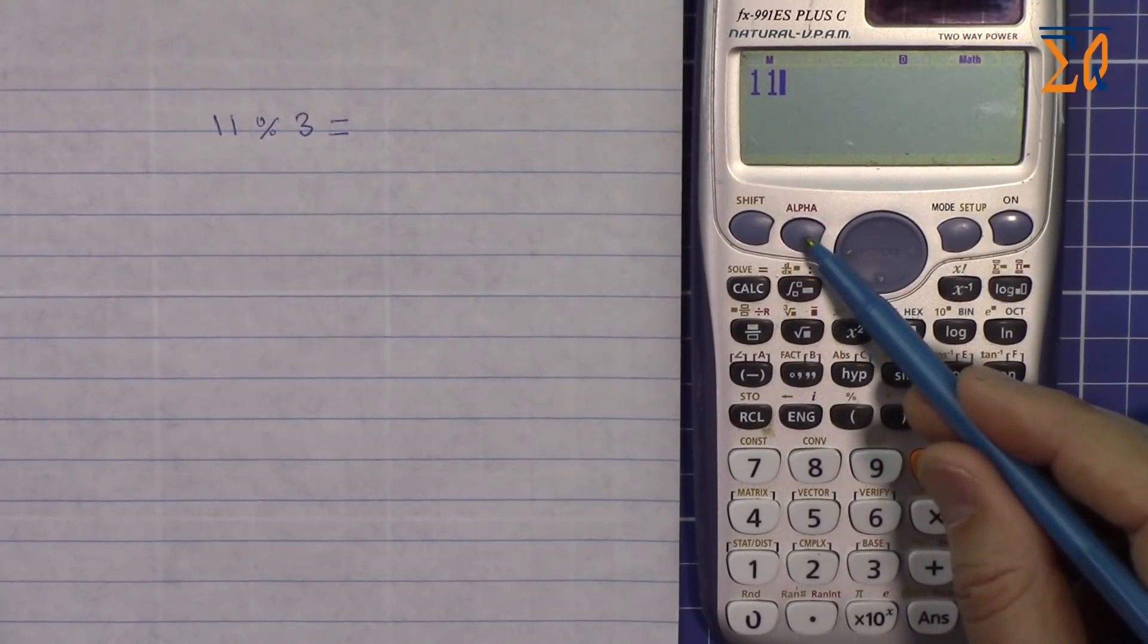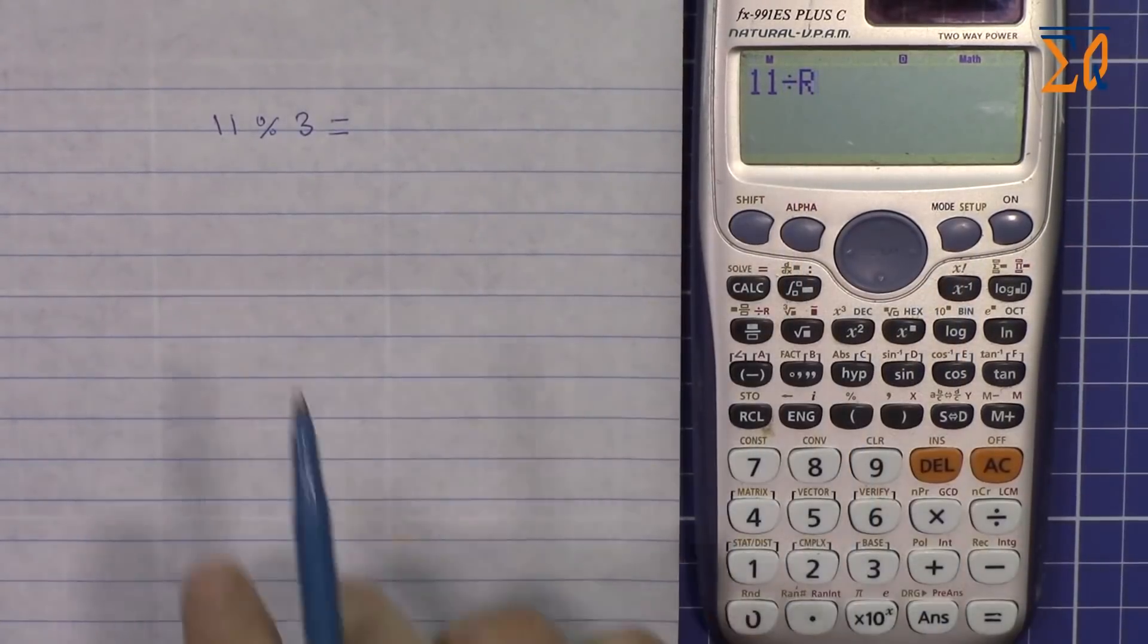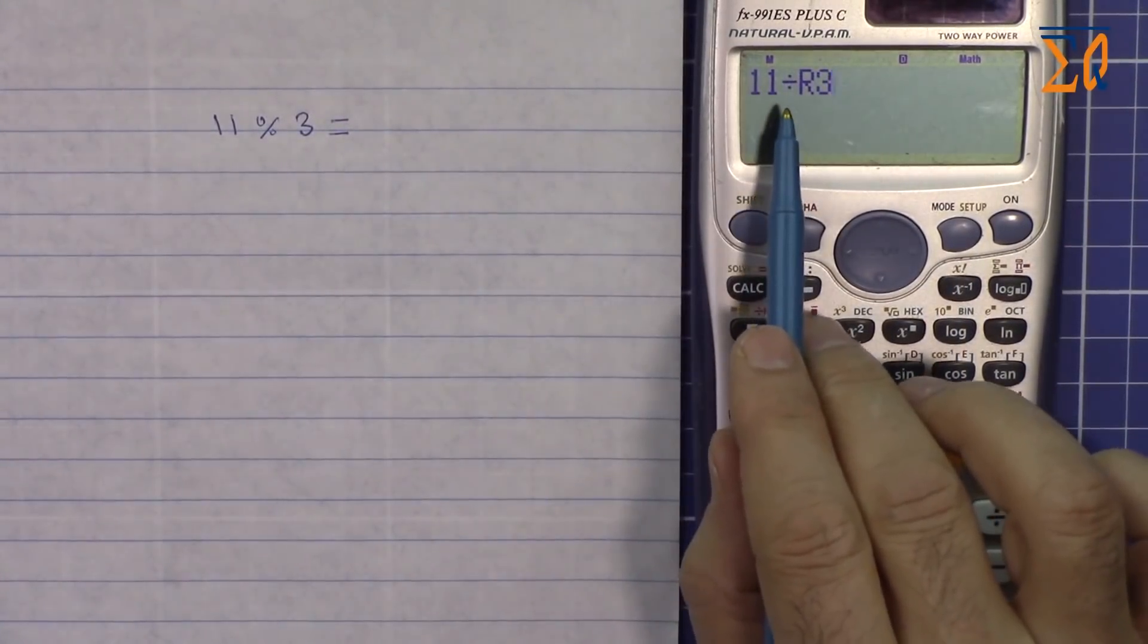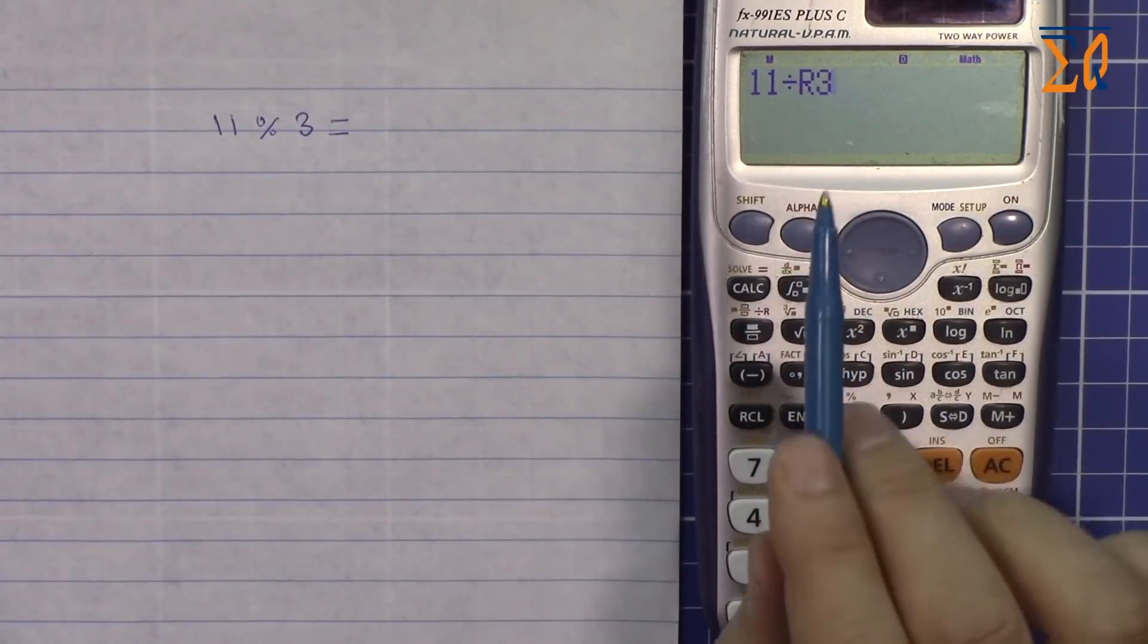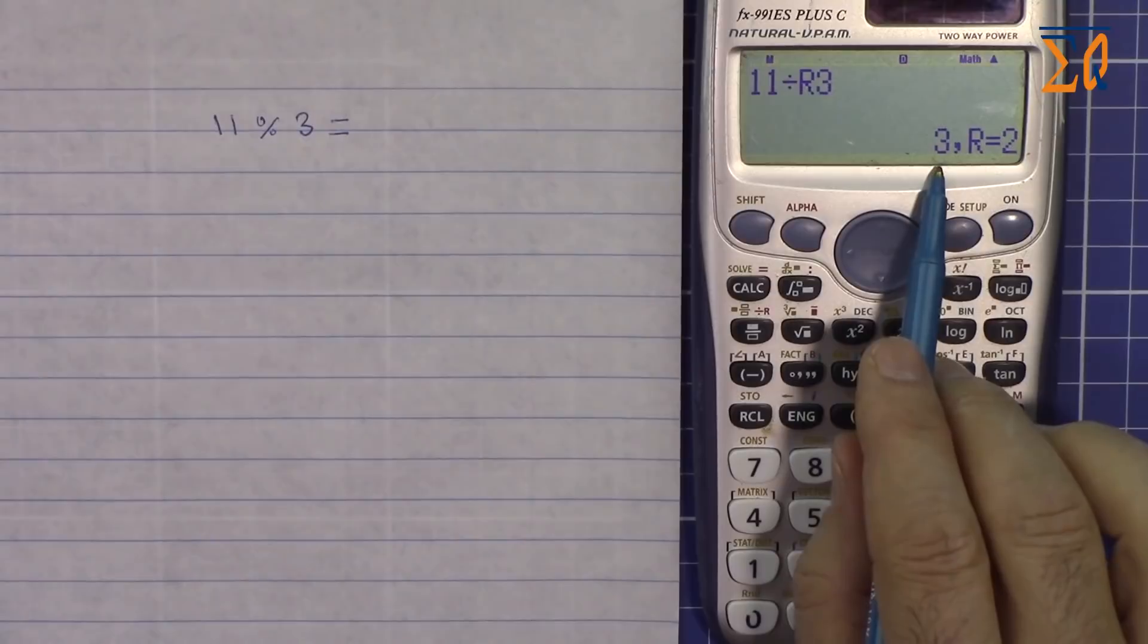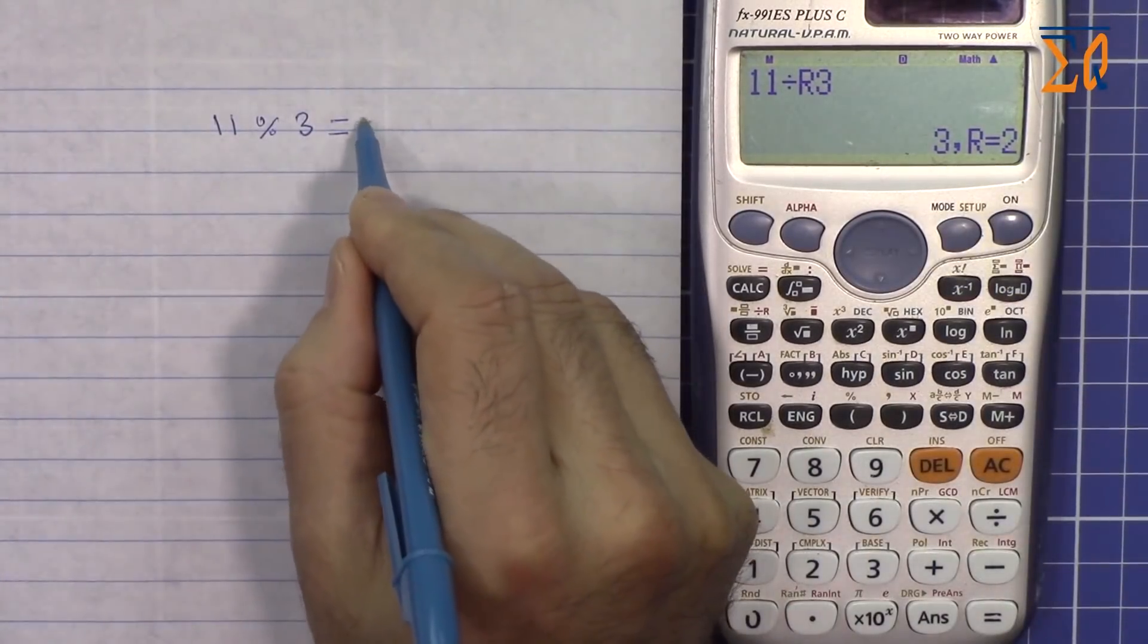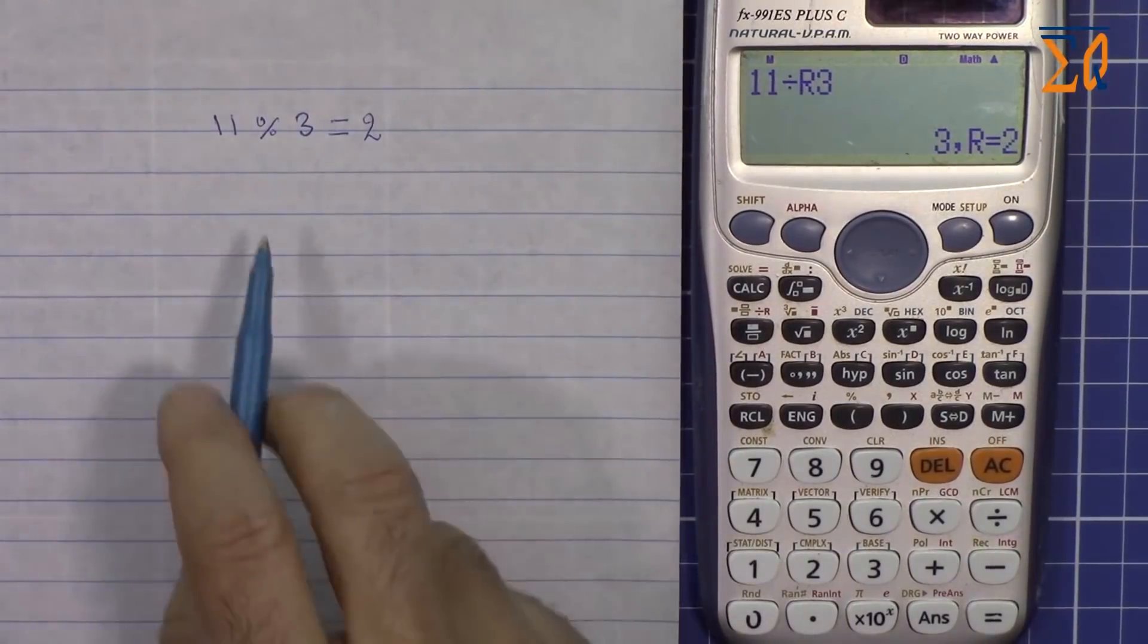So we press alpha, alpha, this one, and then 3. 11 divide R and then 3 equal. As you can see it shows 3 and then R remainder which is 2, so that is the answer, 11 modulus 3 is 2.